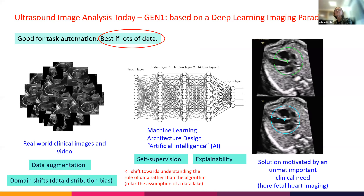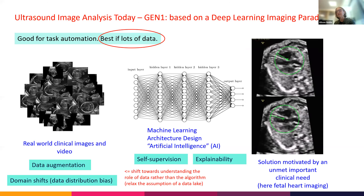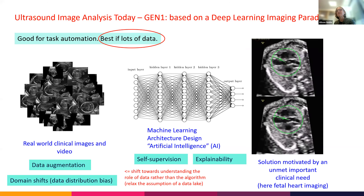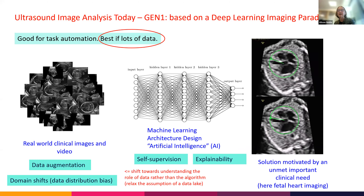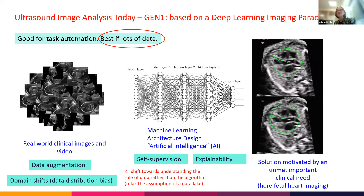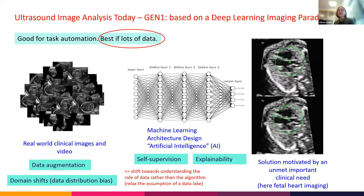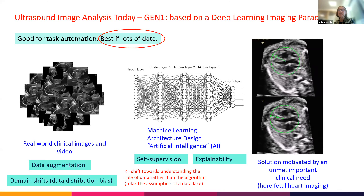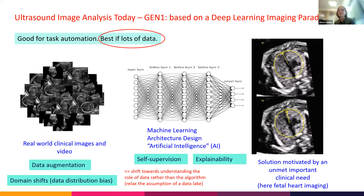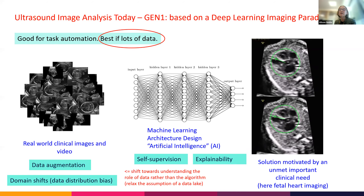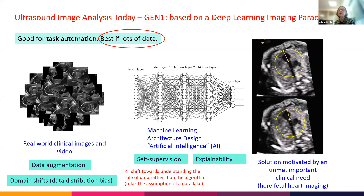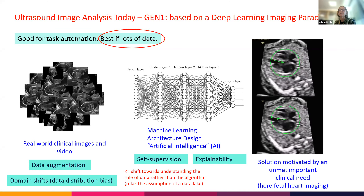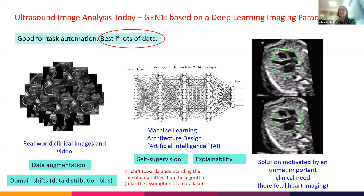This shift toward understanding the role of data rather than just the algorithm — relaxing the assumption that a data lake is available — is one of the most important shifts in medical image analysis. It moves us away from applied computer vision toward really thinking about the important issues relevant to our particular space of medical imaging and developing our own ways to model problems specific to healthcare data.